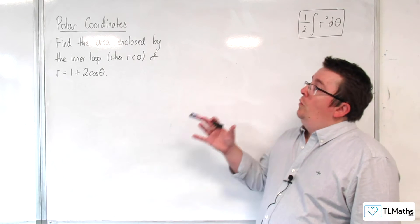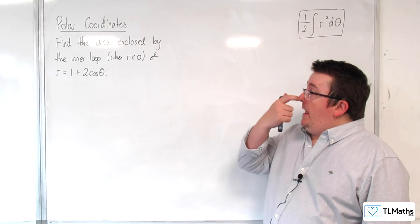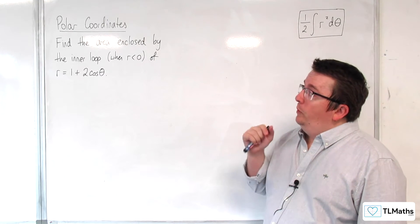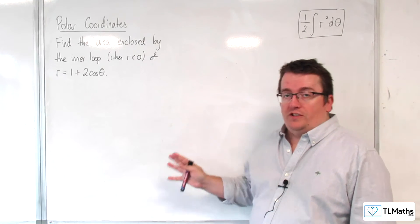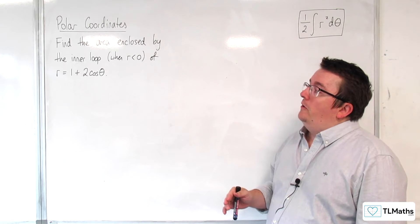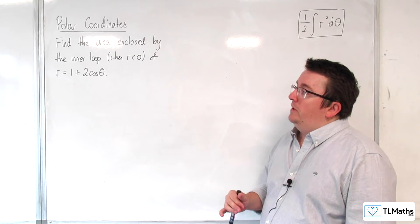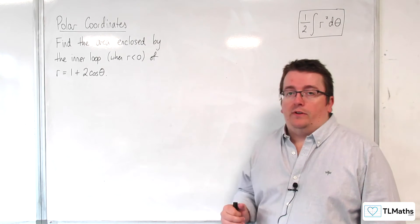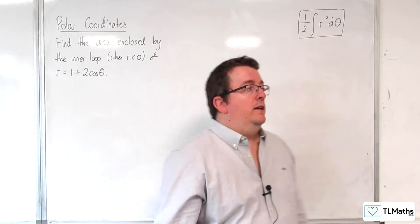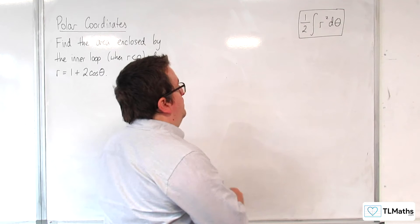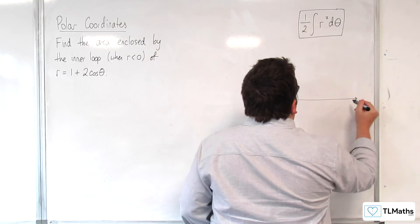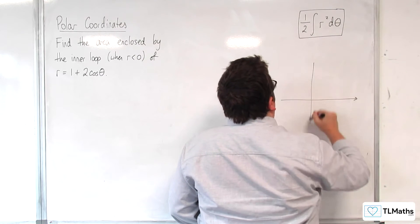In this video, we're going to be finding the area enclosed by the inner loop — that's when r is negative — of r equals 1 plus 2 cosine theta. Now we've looked at that curve before, just to remind you what it looks like.